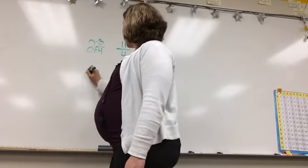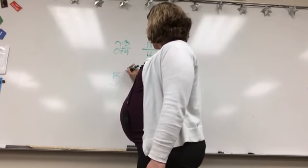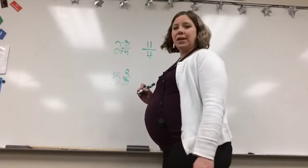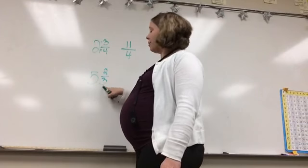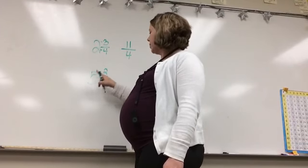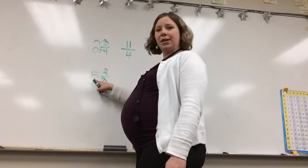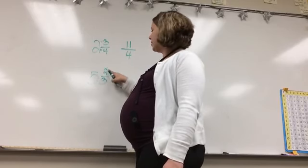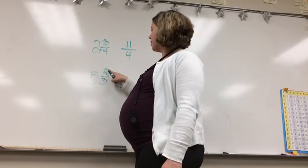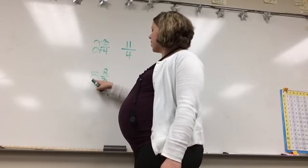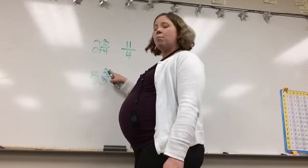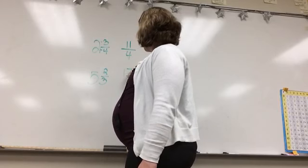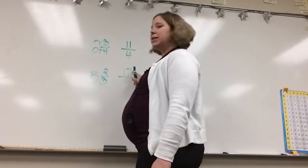Let's go over that again. If I have 5 and 2 thirds, the first thing I'm going to do is multiply the denominator by the whole number. 3 times 5 is 15, and then add the numerator — the number on top. So 3 times 5 is 15, plus 2 is 17. That becomes my top number.